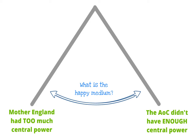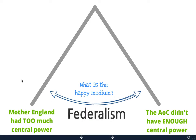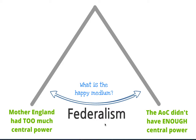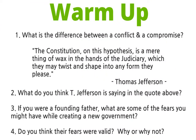That brings us back to the pendulum — we had to decide what the happy medium would be. On one side was a tyrant with too much power, and on the other they didn't have enough. This happy medium is going to be called federalism, and federalism is when the federal government and the state government share power. And that's it for today.